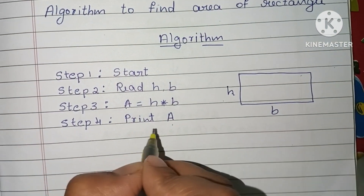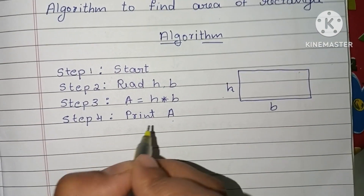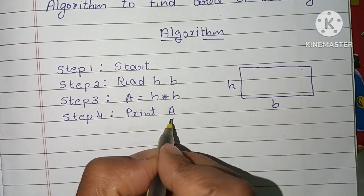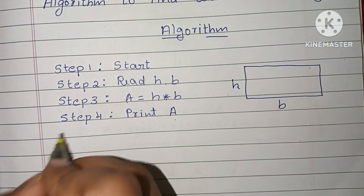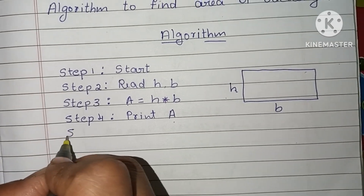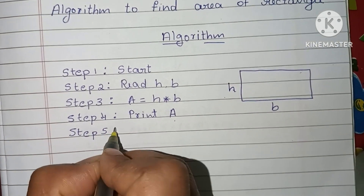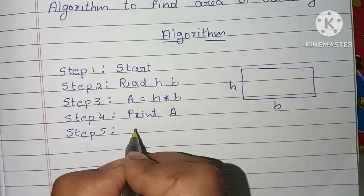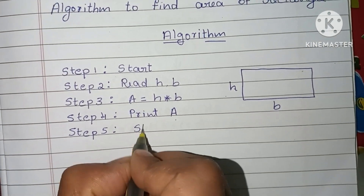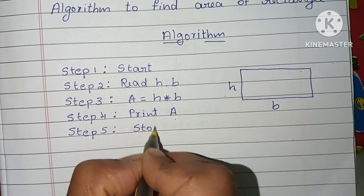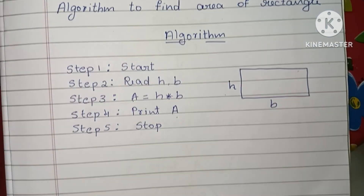In Step 4, we have to print the output, that is A, where A represents the area of the rectangle. In Step 5, we have to stop the algorithm using a stop statement.